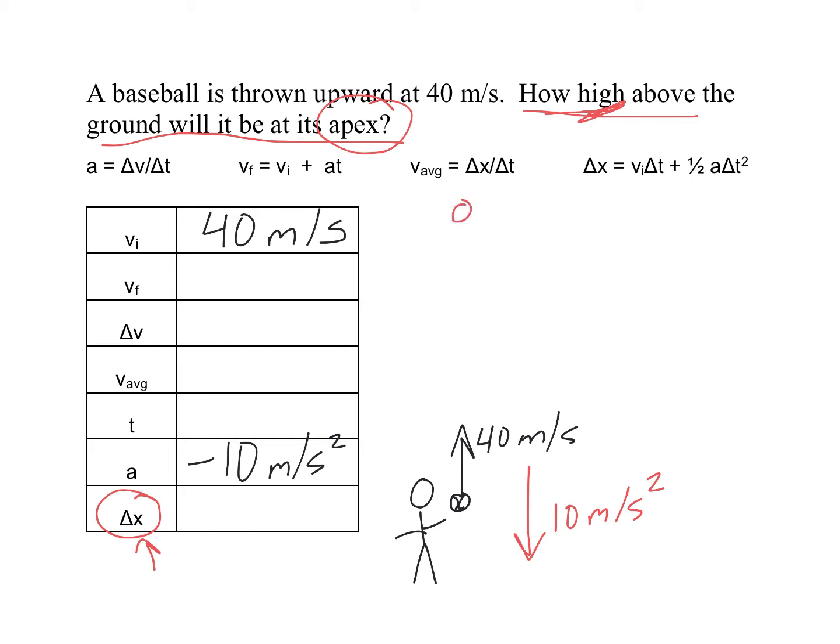So this ball is going to go up into the air and then fall back down. I want to know when it reaches this highest point, how high above the ground is it? So what do we know about it at its highest point? Well, as it goes up in the air, it's going to slow down. And at the highest point, it briefly is going to have a velocity of zero because that's when it's going to turn around and start falling.